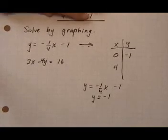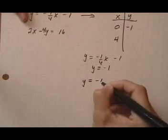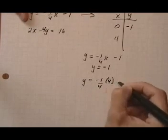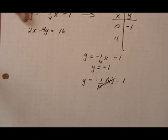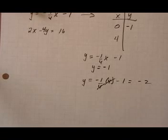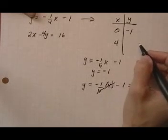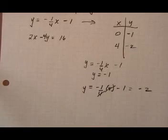Now I'm going to put in x is 4. So if x is 4, I get minus 1 fourth times 4, take away 1. 4 and 4 cancel out. It gives me minus 1, minus 1, or negative 2. So when x is 4, y is negative 2. So those are the points for the first equation.